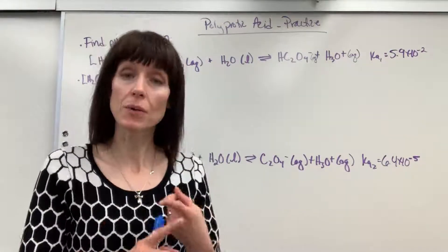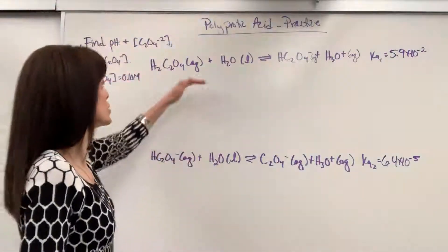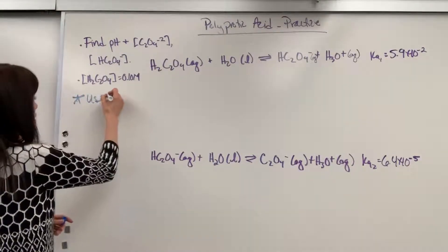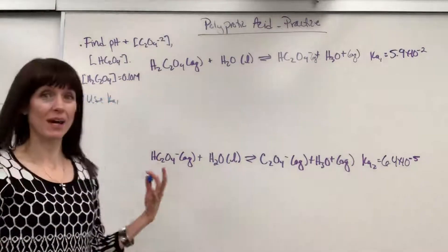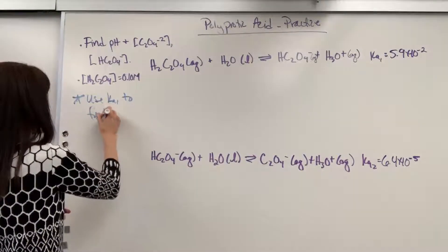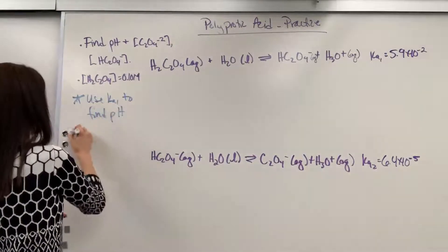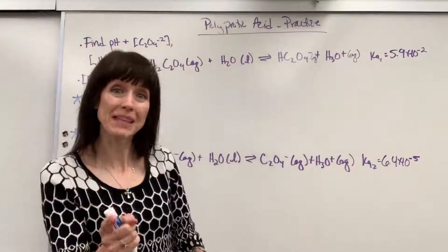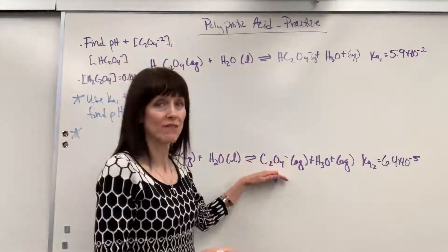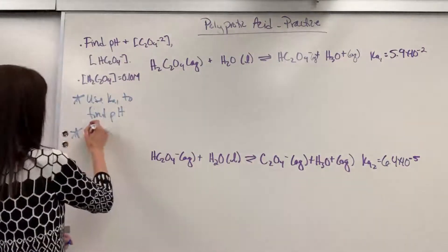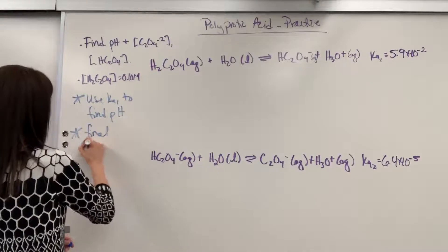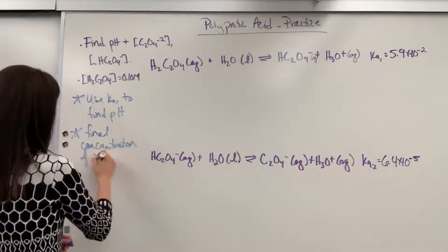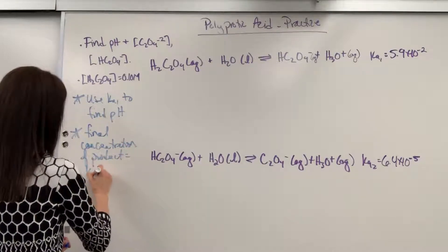Here are your two takeaways. Number one, when you're finding pH, use the first Ka. So first big takeaway: use Ka1 when you do the ICE table to find pH. The second big takeaway is whatever the last Ka is — so Ka2 — that is going to be the concentration of the final product.